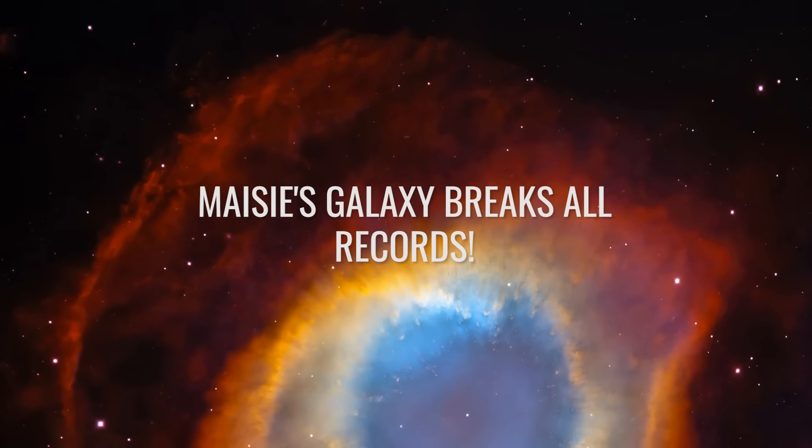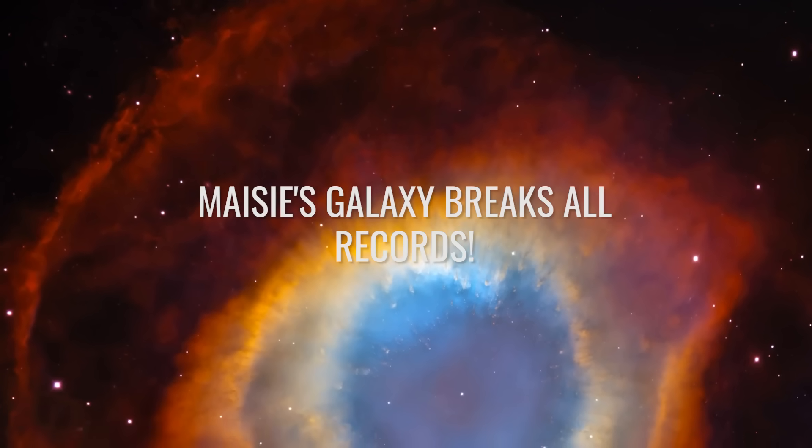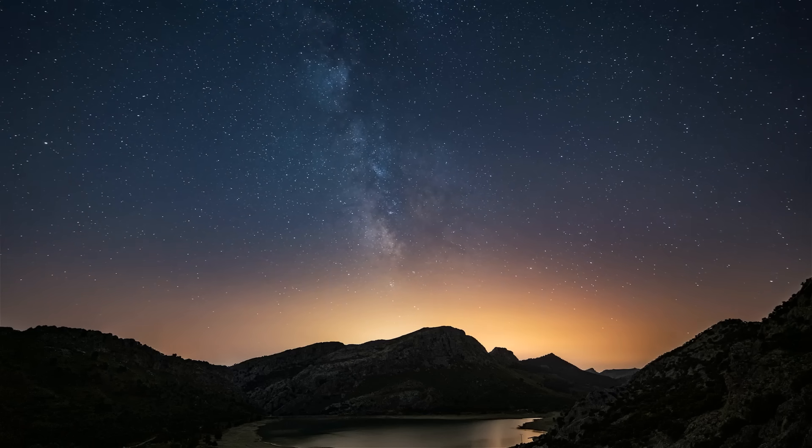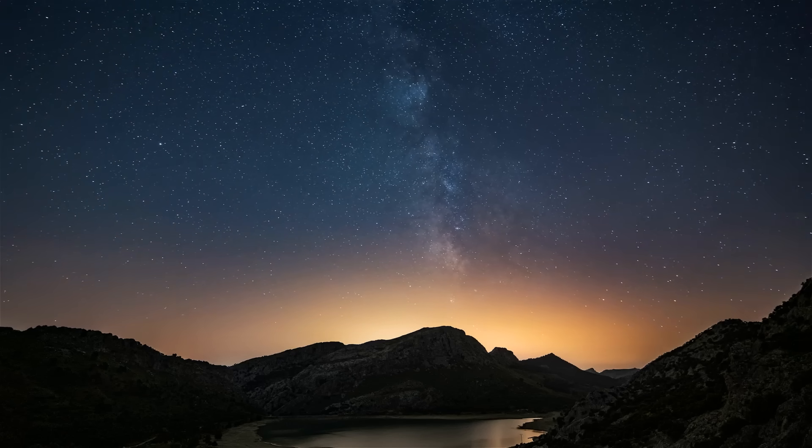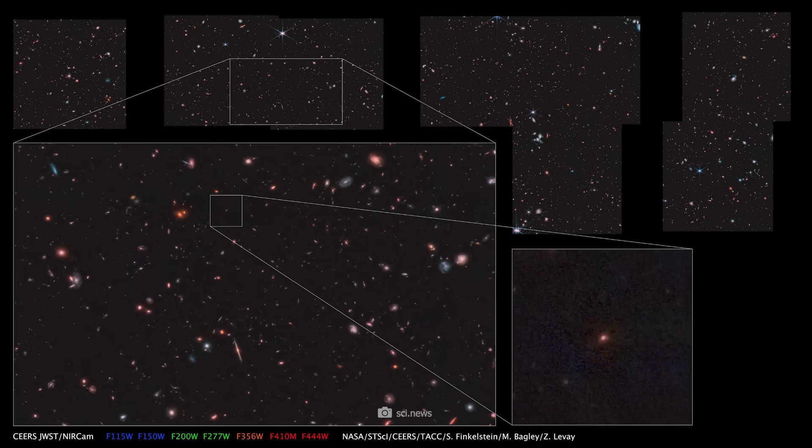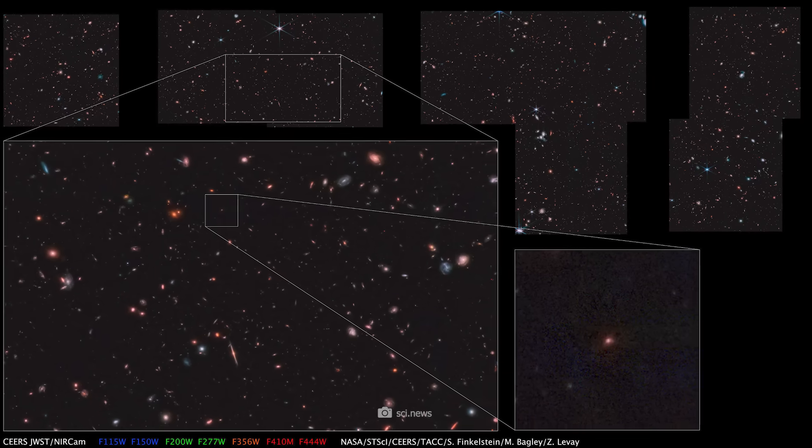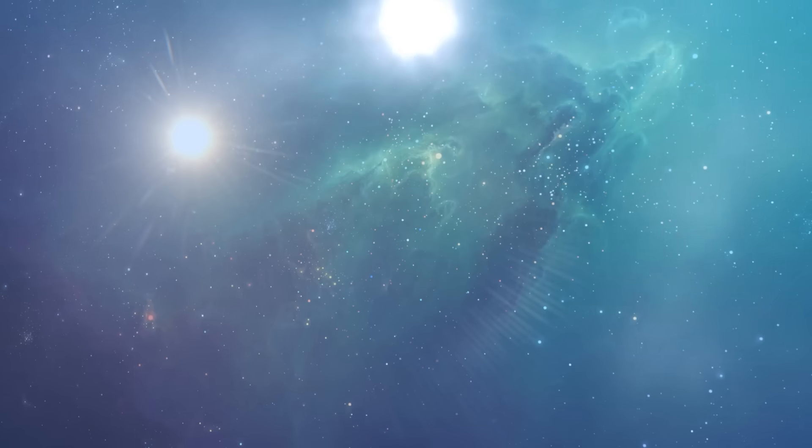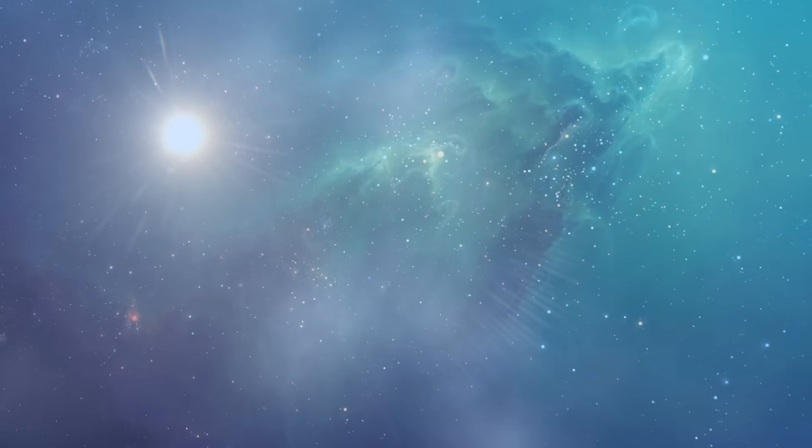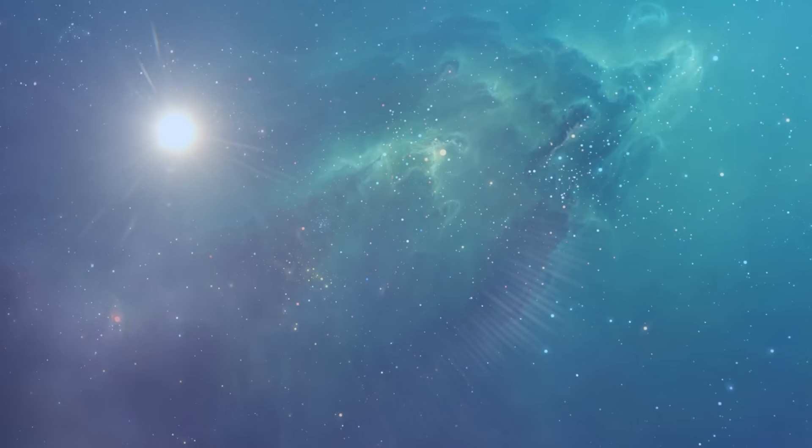Macy's galaxy breaks all records. It is fascinating how astronomers managed to determine the age of such distant objects almost exactly. The precise age determination of Macy's galaxy and many others was made possible by spectroscopic analysis. This technique, which breaks down light into its various wavelengths, allows astronomers to determine the chemical composition, distance, and other important properties of celestial bodies.